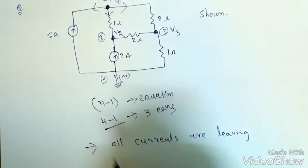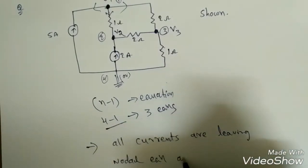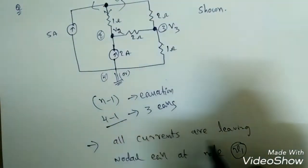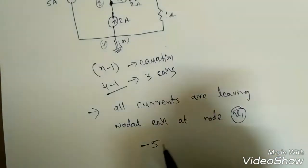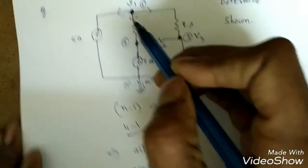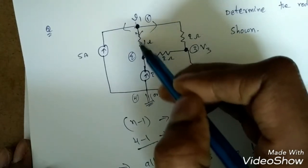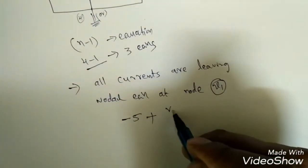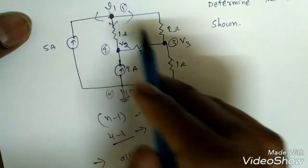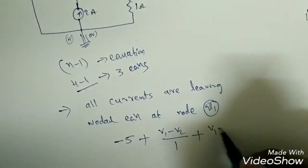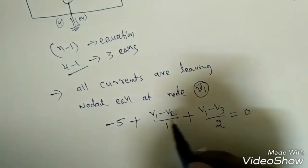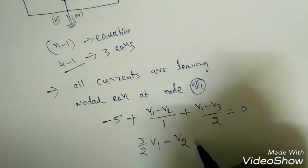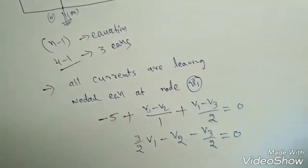Writing the nodal equation at node V1: the 5 ampere source is entering, so with our assumption of all currents leaving, it becomes minus 5. Then plus (V1 minus V2)/1 plus (V1 minus V3)/2 equals 0. Rearranging: (3/2)V1 minus V2 minus V3/2 equals 5. This is equation 1.